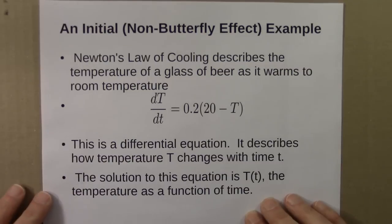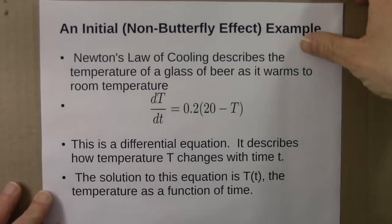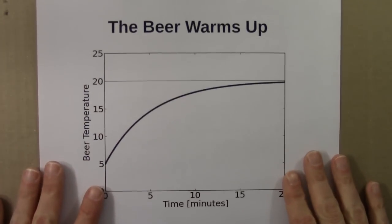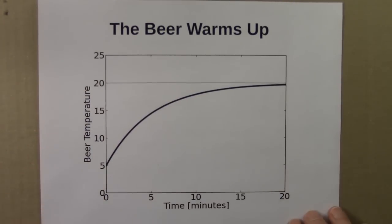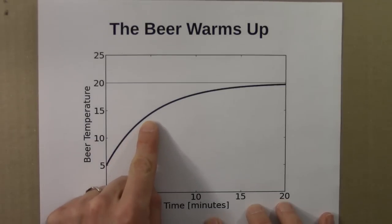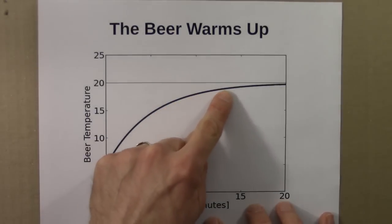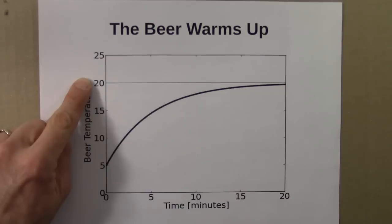A solution to this equation, which I'll do from Euler's method or something similar on a computer, is capital T of t, the temperature of the beer as a function of time. We start with a temperature of 5, the beer warms up quickly at first, then increasing less quickly, and it approaches the equilibrium value, which is stable or an attractor, at 20 degrees.